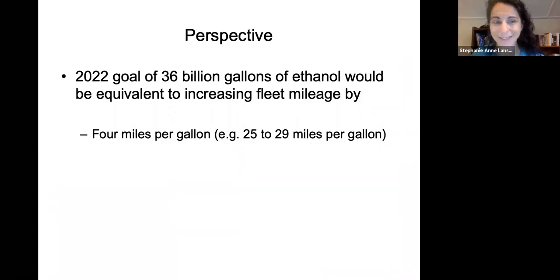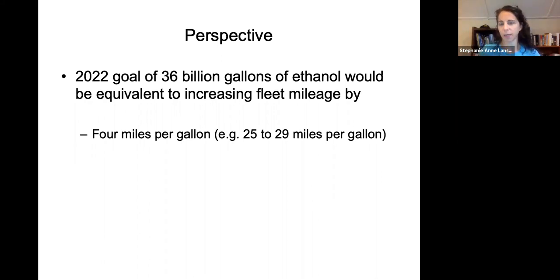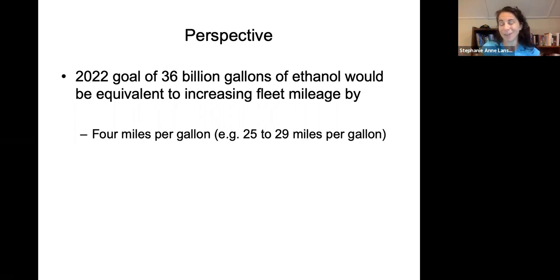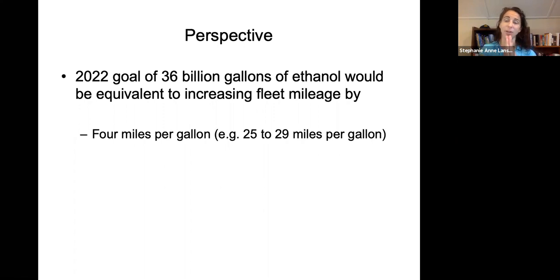To put this in perspective: the 2020 goal of 36 billion gallons of ethanol from the Energy Independence and Security Act of 2007 would be equivalent to increasing the whole U.S. fleet mileage by 4 miles per gallon — from 25 to 29 miles per gallon. Driving habits, hybrids, and electrics all matter, but if we can just make our engines more efficient along with some ethanol production, we could be more sustainable in terms of our gasoline use.